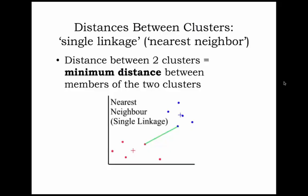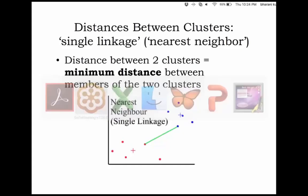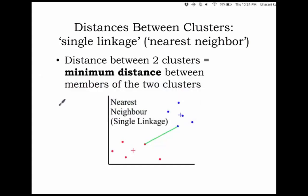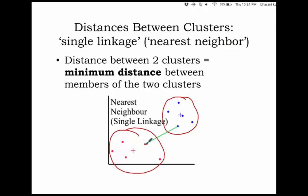All the distances we have calculated until now are distances between different records, but it can be used for different groups also. We have predominantly discussed how to calculate the distance between two data points, but what if you need to calculate the distance between one cluster and another cluster, or between a single record and a cluster? How do you do that? You can either use single linkage.